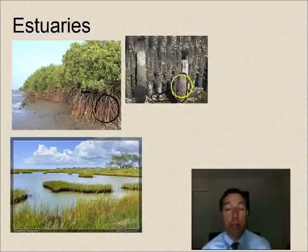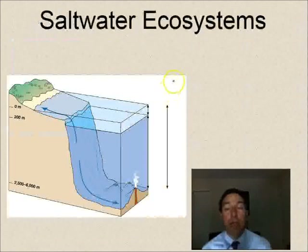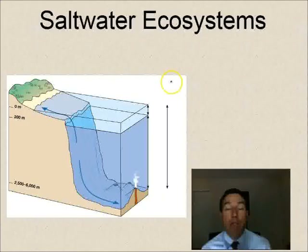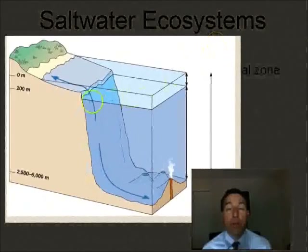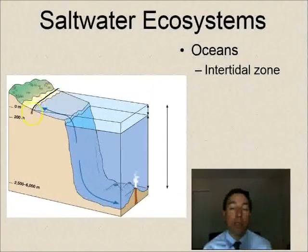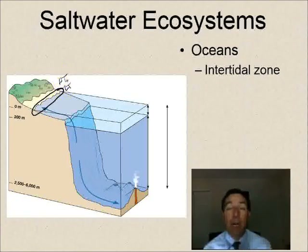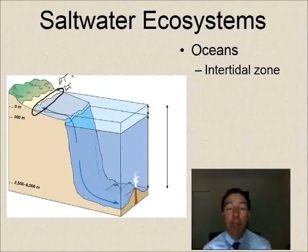Our last major ecosystem type is saltwater — oceans, seas, and gulfs. These are very large aquatic ecosystems with distinct zones. The first is the intertidal zone — the area between high tide and low tide where the water meets the shore. Organisms here must be highly adapted to constant change: pounding waves, changing temperatures, and sometimes being trapped in a tide pool and getting heated up for long periods.